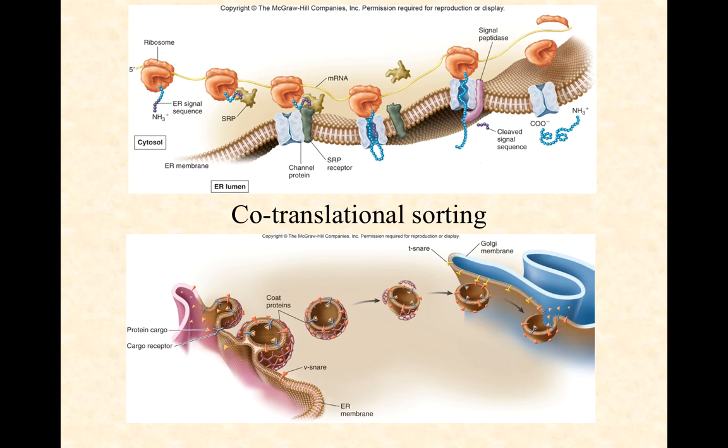So the T-snare and the V-snare interact, and that triggers the fusion of the vesicle membrane with the target membrane, so its cargo can be released into the interior of where it was headed. So another part of sorting is making sure that these V-snares and T-snares are properly guiding different vesicles with different cargo from one compartment in the cell to another compartment in the cell.